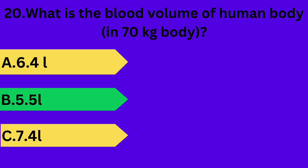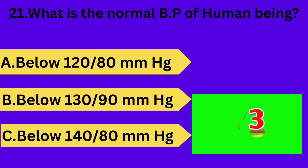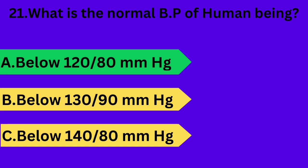And next question is: what is the normal blood pressure of a human being? Option A: below 120 by 80 mmHg. Option B: below 130 by 90 mmHg. Option C: below 140 by 80 mmHg. Your time starts now. Answer is option A: below 120 by 80 mmHg.